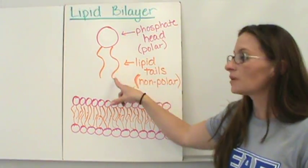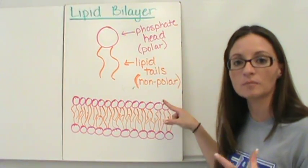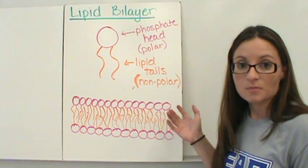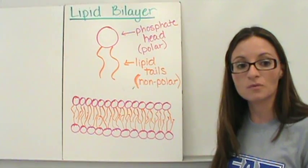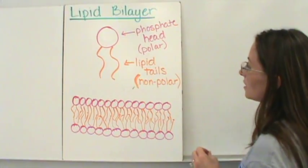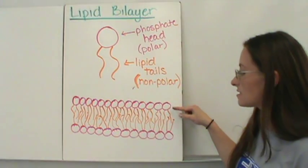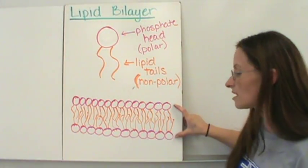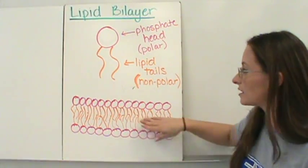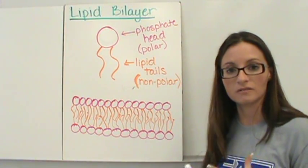We also have two lipid tails that come off of the phosphate head. The two lipid tails are non-polar, so they are not going to want to mix with water or anything else that's polar. This is actually what helps to protect the cell. If you look closely at this bilayer, we have two layers — the inside and outside of the cell membrane have the phosphate heads, and the inside of the cell membrane has our lipid tails. This is important for the protection of the cell.